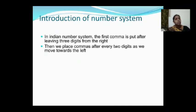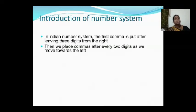The ones period has three place values, so you apply the comma after three digits. Then, leaving two digits at a time, you apply a comma because all periods except the ones period have two place values each.